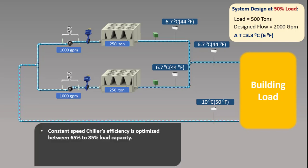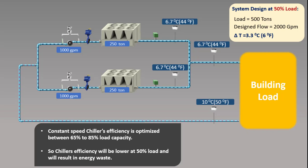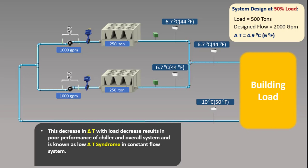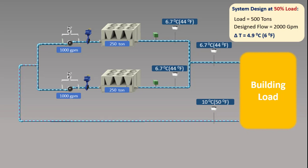Usually, constant speed chillers' efficiency is optimized between 65% and 85% of their load capacity, so chiller efficiency will be very low at 50% load, resulting in energy wastage. This decrease in delta T with load decrease results in poor performance of the chiller and overall system, known as the delta T syndrome condition in a constant primary flow system. One solution to increase the delta T is to turn off one of the chillers. However, the pump of the off chiller is still running as we need to supply constant flow at all times.